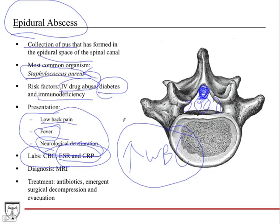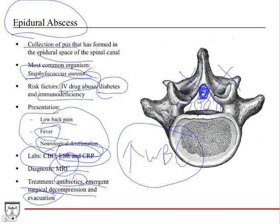Complications include sepsis, which can kill the patient, and significant permanent spinal cord injury with paralysis. Treatment requires an MRI, IV antibiotics, and emergent surgical decompression and evacuation — a laminectomy to remove the lamina and drain the abscess.